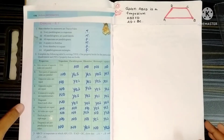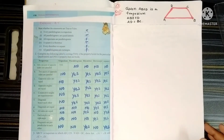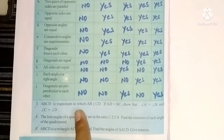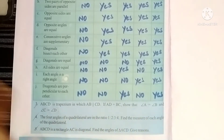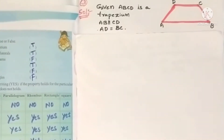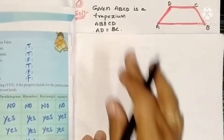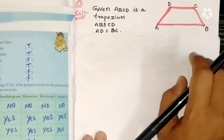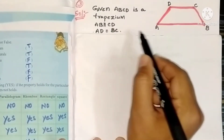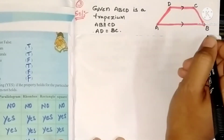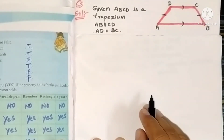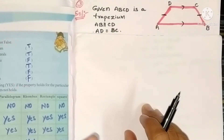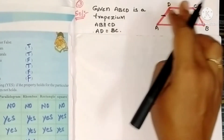Hello students, welcome to my channel. Today in this video we are going to see the third problem solution of exercise 8.1. The third problem: ABCD is a trapezium in which AB is parallel to CD. If AD equals BC, show that angle A equals angle B and angle C equals angle D. First, write the given information and draw a trapezium diagram named ABCD. AB is parallel to CD, so these two sides are parallel, and AD equals BC.